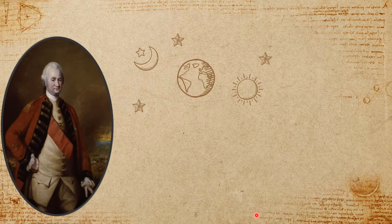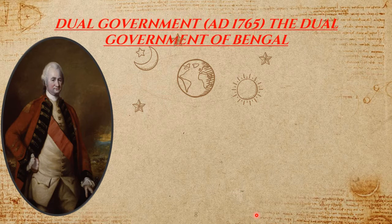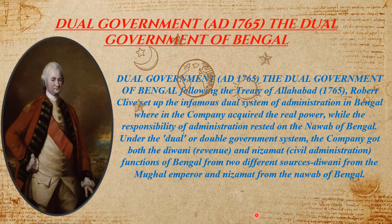Clive introduced dual government in Bengal in 1765. Bengal now had two masters — the Nawab and the Company. The Nawab was responsible for general administration, maintenance of law and order, and justice, while the Company had military power and the rights to collect and use the revenue of Bengal. This arrangement was known as dual government, which was later abolished and Bengal was brought under the direct and complete control of the Company.